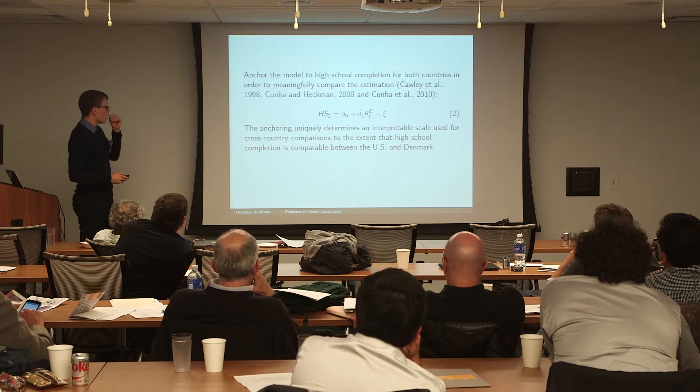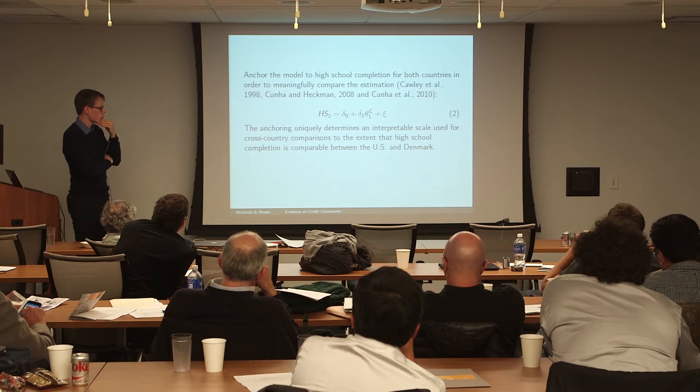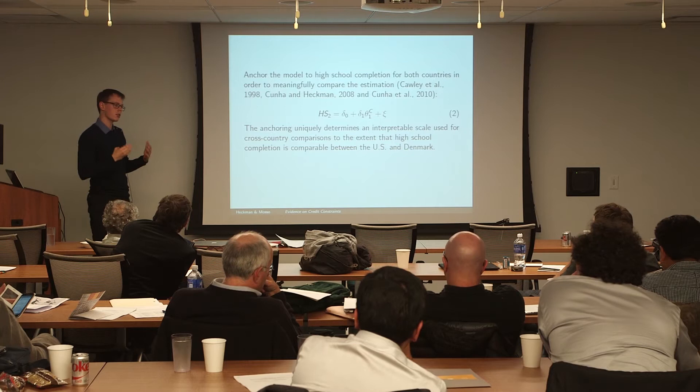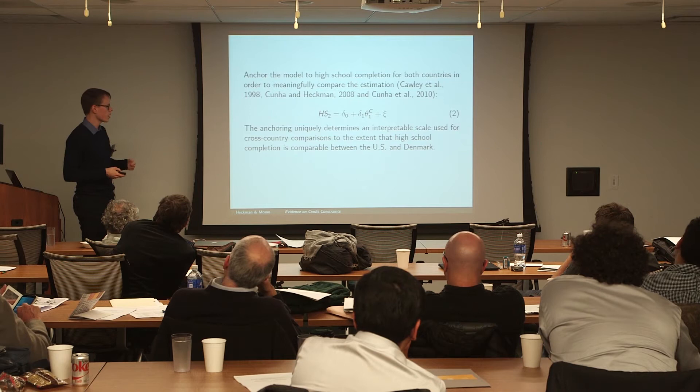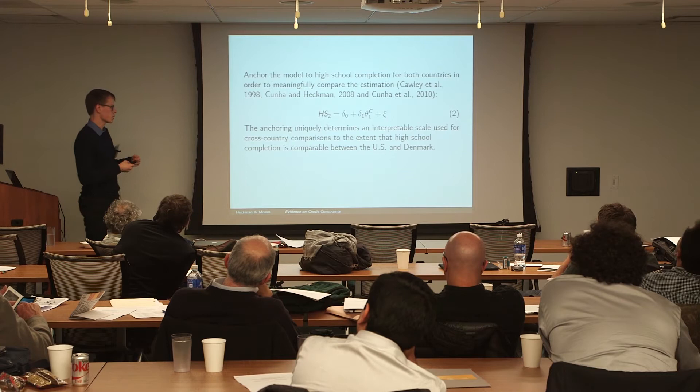We linearize this version completely, which means we will not be able to compare complementarity properties between the two countries. The model is anchored in high school completion for both countries, in order to find a scale that allows meaningful comparison — because the cognitive and non-cognitive skill factors estimated have no natural scale. Anchoring to the same outcome gives an interpretable scale, at least to the extent that high school completion is comparable between the two countries. An audience member asks whether the model could be anchored to earnings instead.